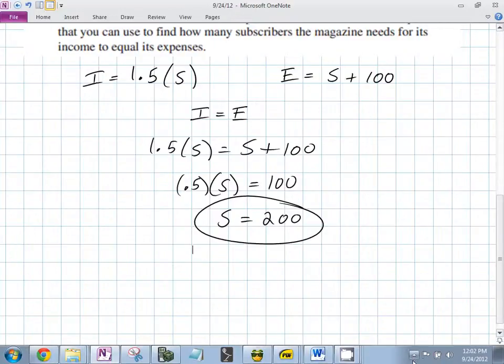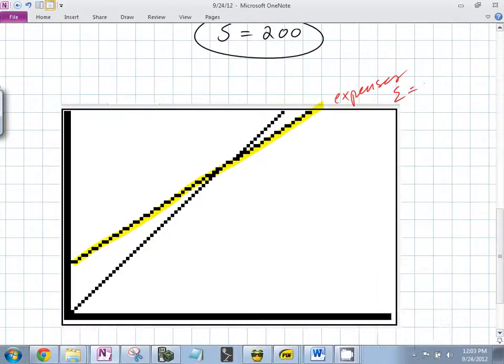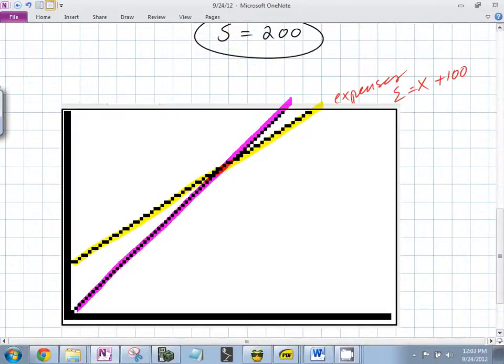So what would this look like graphically? What would this look like graphically? Expenses equals what? 100. And we can say X. And our income was right here.